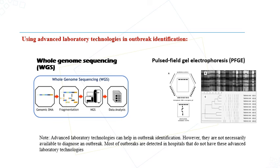There is advanced laboratory technology that can be used in outbreak identification, such as whole genome sequencing and pulsed-field gel electrophoresis. This advanced technology provides bacterial typing and identification of epidemiological links between bacterial isolates. However, it is very important to know that the presence of this advanced technology is not necessary for diagnosing an outbreak — many outbreaks are identified in hospitals that do not have this technology.